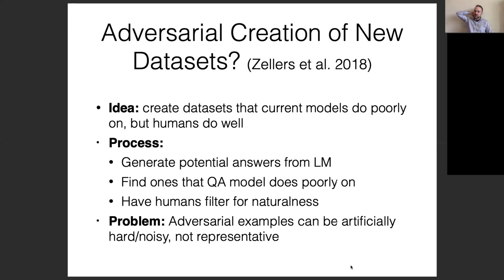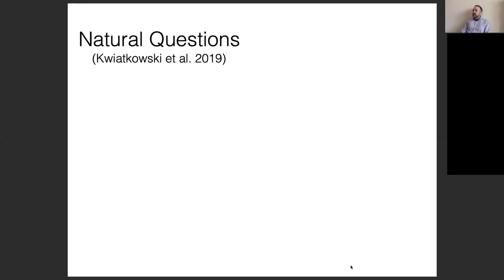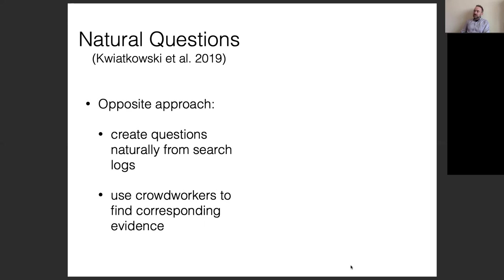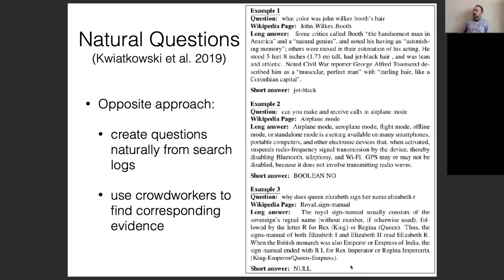In contrast, there's a dataset called Natural Questions which takes the opposite approach. It creates questions naturally from search logs and then uses crowd workers to actually answer the questions. So instead of creating artificial questions, it takes natural questions and creates the answers from them. This was created by Google, which obviously receives lots of search queries, so they have access to these naturally occurring questions.